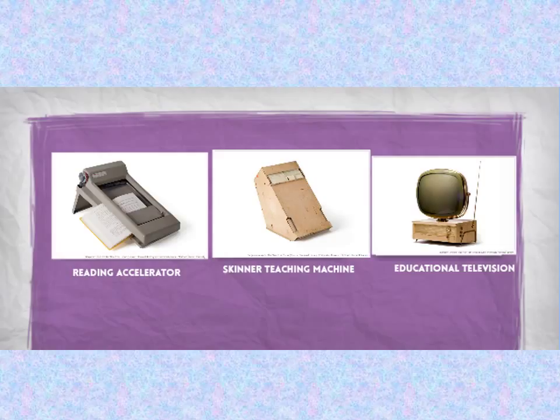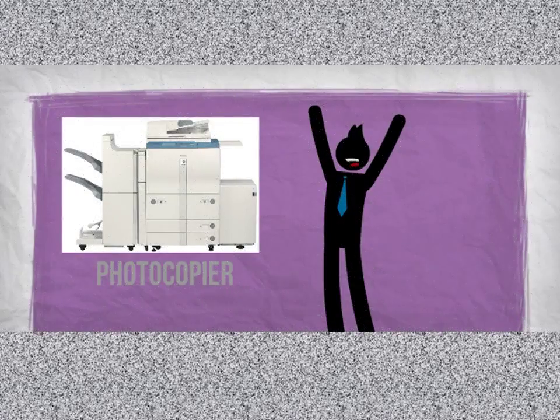During this year, the Skinner teaching machine was also introduced. This technology followed a similar method of instruction. A year later, the educational television which allowed for educational programming was introduced. The photocopier was introduced in 1959 by Xerox. This technology is still being used today and most organizations plan to go paperless. For educators, this meant that resources could be delivered to students and kept on file.